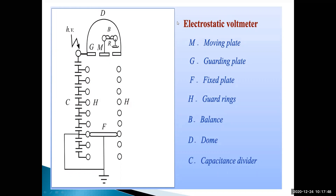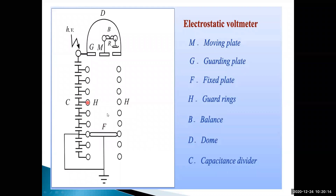There are two different types of electrostatic voltmeters: attraction type and repulsion type - repulsion type moving iron type also. In this electrostatic voltmeter, this is the high voltage terminal. This high voltage transmission line terminal is connected to one side of the equipment - one high voltage terminal is connected here.